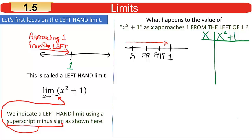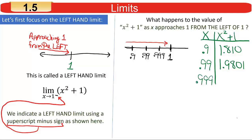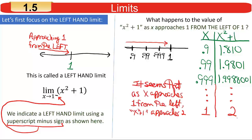If you make a chart and compute these values: plugging in 0.9, squaring and adding 1, you get about 1.810. Plugging in 0.99 — your calculator is very useful here — you get about 1.9801. And if you put in 0.999, square it and add 1, you get about 1.9988001. Those values are getting closer and closer to 2 as x gets closer and closer to 1. So we say that the left-hand limit of that expression is equal to 2.